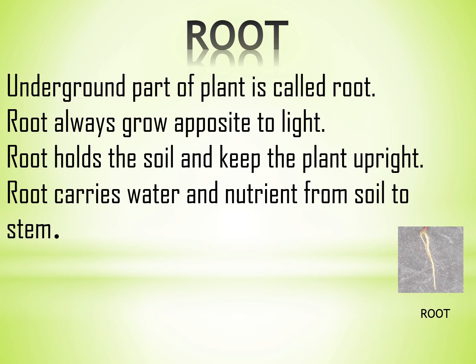Root. The underground part of a plant is called root. Root always grows opposite to light. Root holds the soil and keeps the plant upright. Root carries water and nutrients from soil to stem.